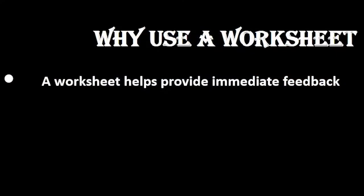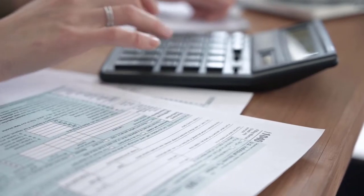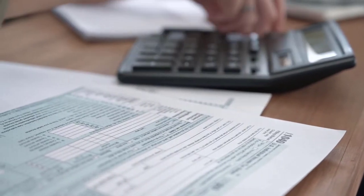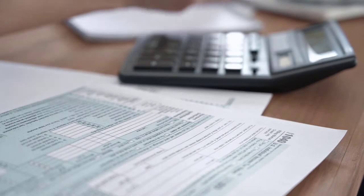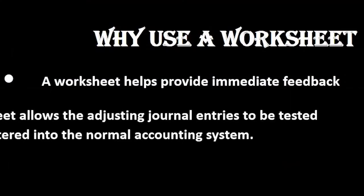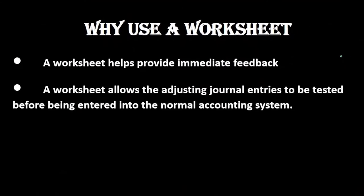It gives that immediate feedback which we don't see as easily when we have to post to the general ledger and then to the trial balance. So when there are only a few types of journal entries, it's really helpful to have a little worksheet like this that gives us everything in one snapshot.